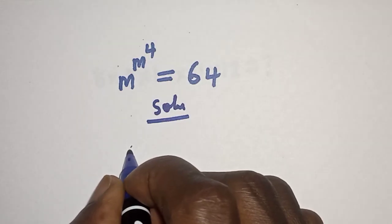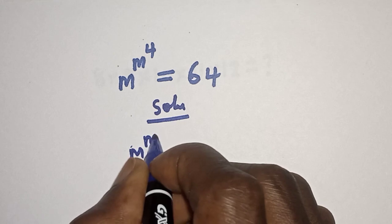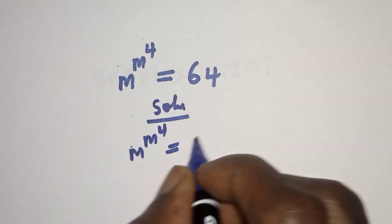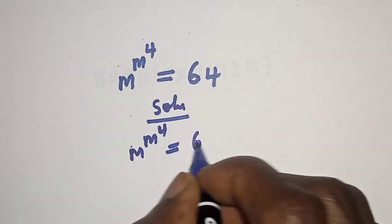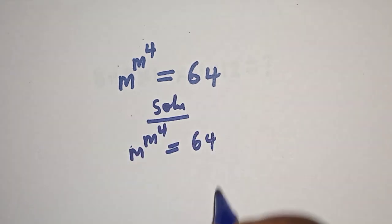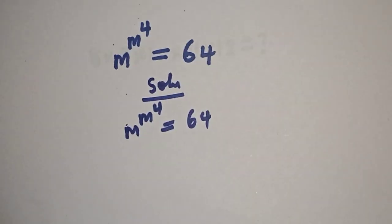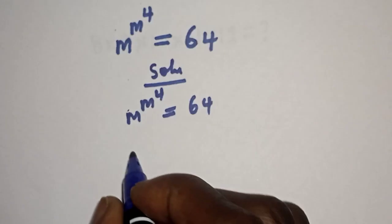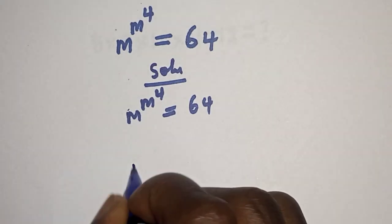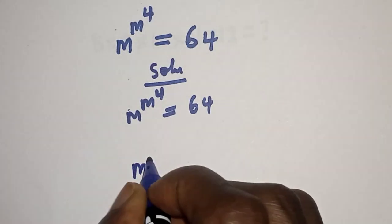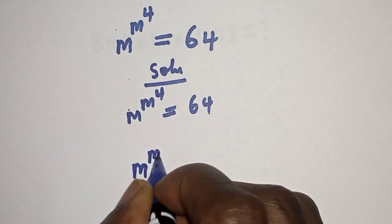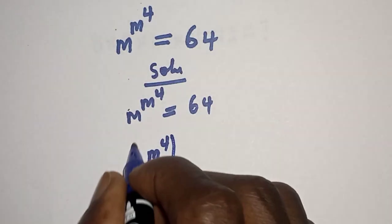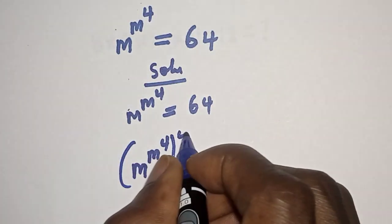We have the given equation: m raised to power m raised to power 4 is equal to 64. Let's multiply the exponent of both sides by 4, that is m raised to power m raised to power 4, to the power of 4.